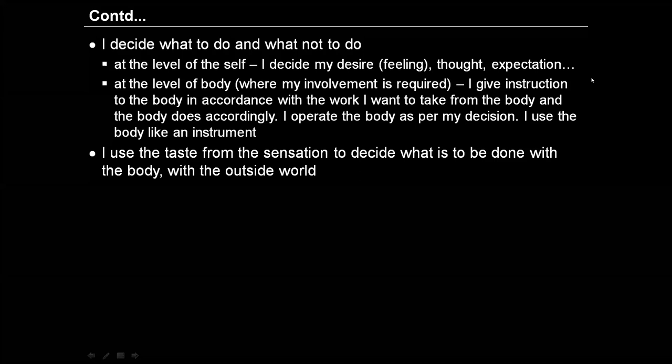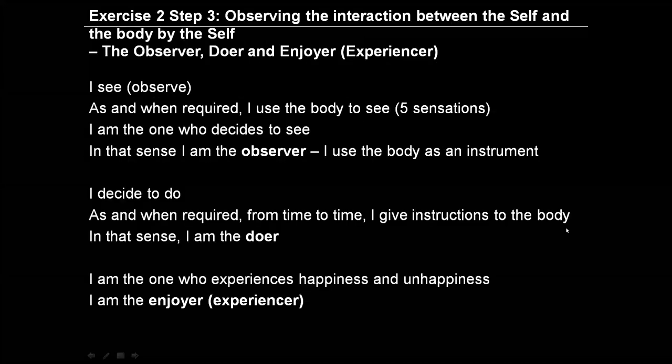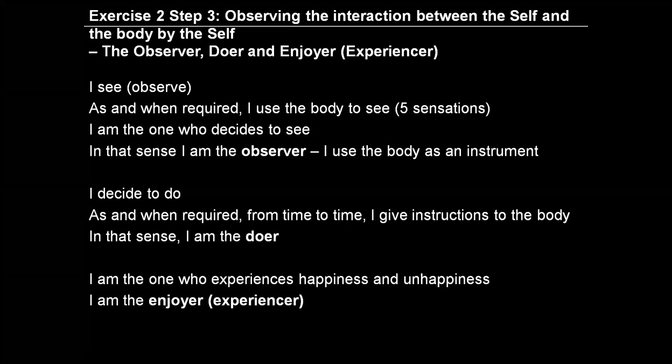Then we go to step five — you will see the details of how we are interacting with the body or with the world outside on the basis of sensation that I read from the body. And there are certain observations which you will be able to make yourself. When we observe the interaction between the self and the body, we can see that the self is the observer, the self is the doer, and the self is the enjoyer — the experiencer.